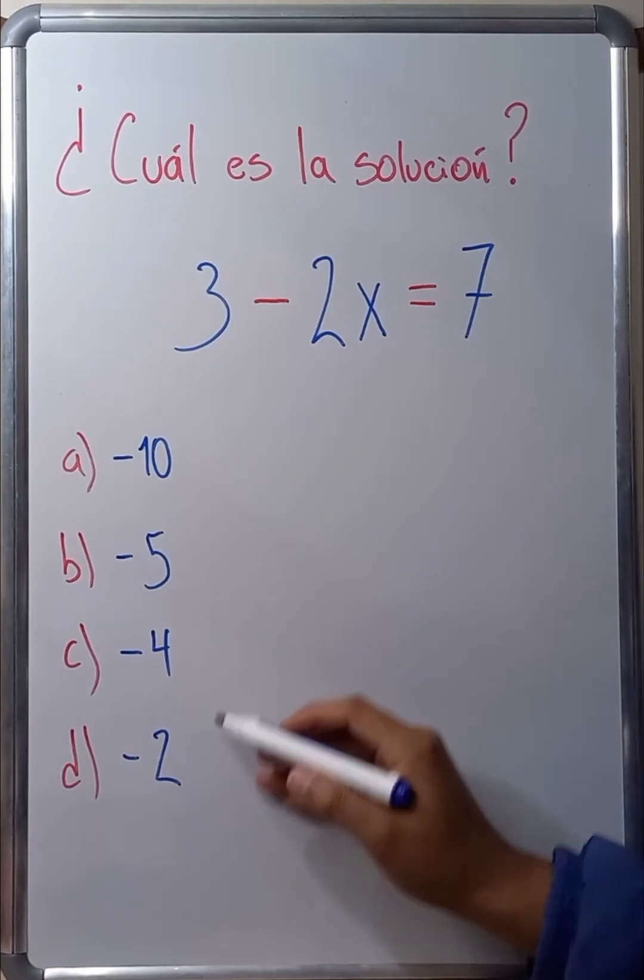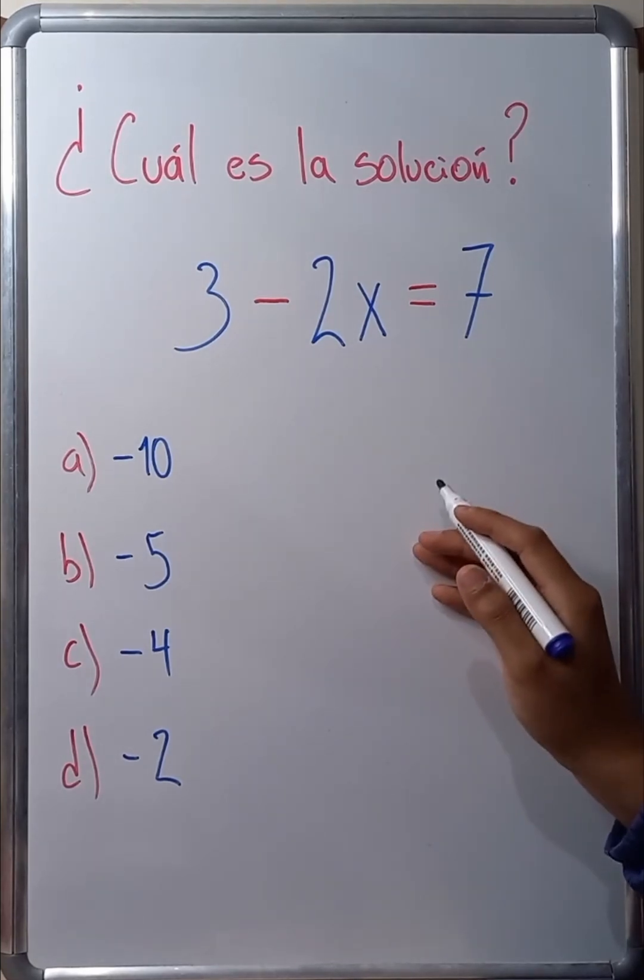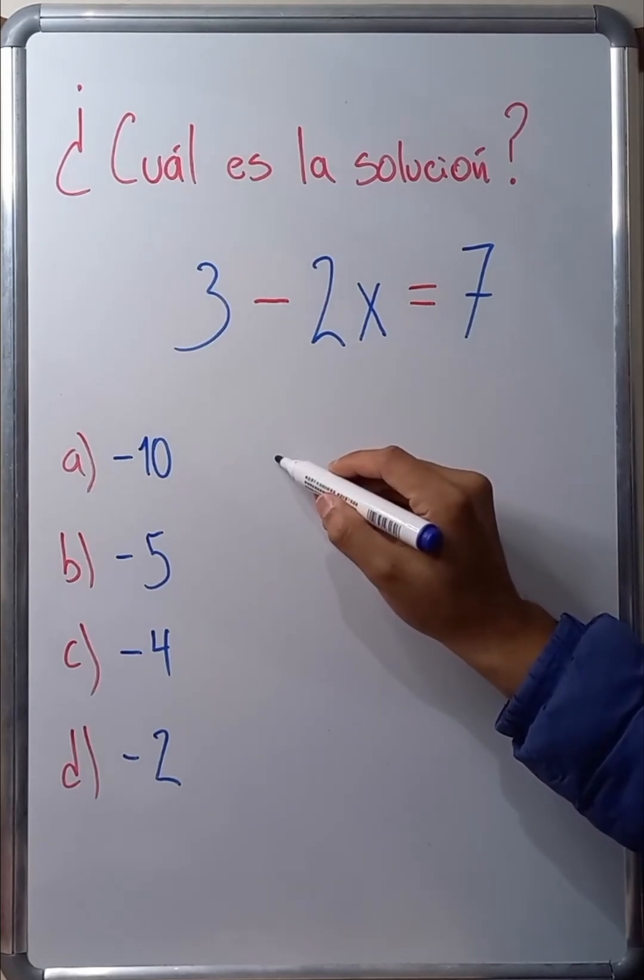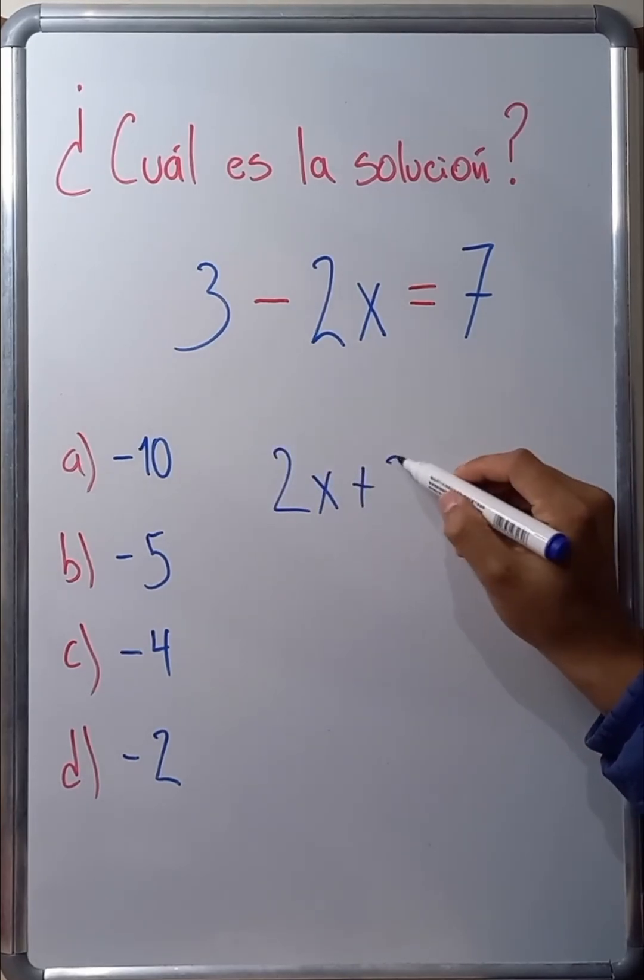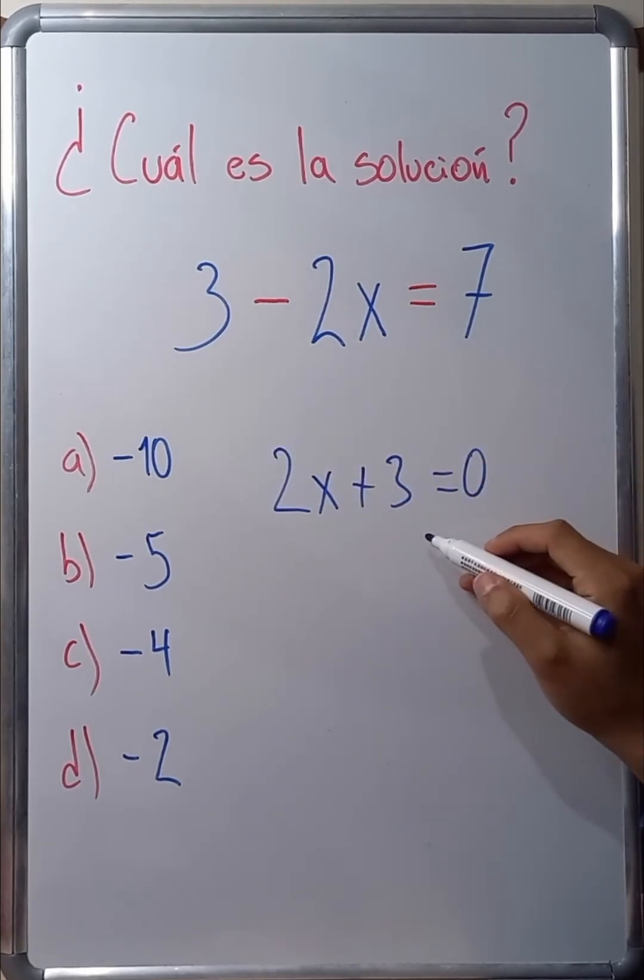Before solving this exercise, it's important to know the following. For example, what happens if we have 2x plus 3 equals 0? What I have to do here is solve for x. To do that,